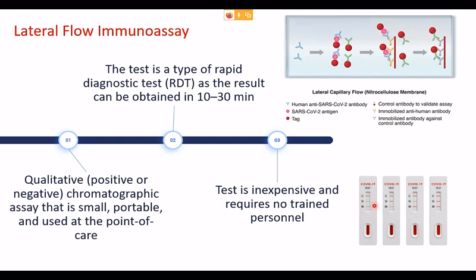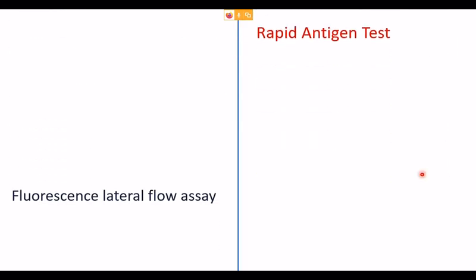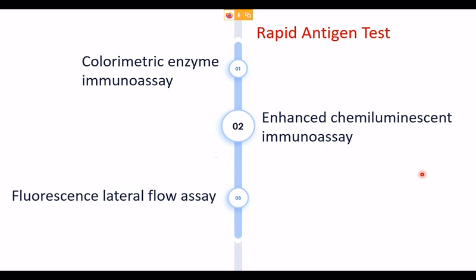The rapid test can detect both IgG and IgM separately. If only the control line appears, no antibodies are present. A line at G indicates IgG is present, suggesting later-stage infection or post-infection immunity. A line at M indicates IgM is present, suggesting early-stage infection. If both G and M lines appear, both antibodies are present. Apart from antibody detection, many rapid antigen detection test kits are also now available.